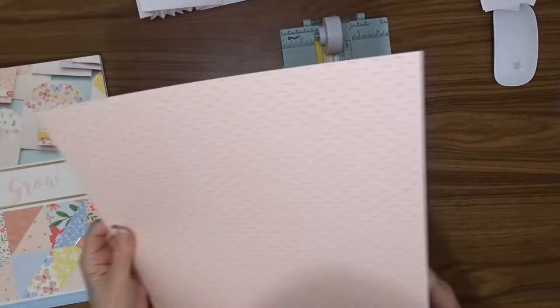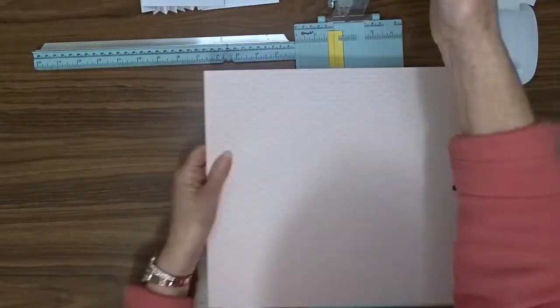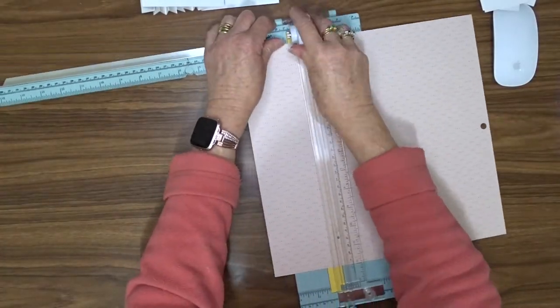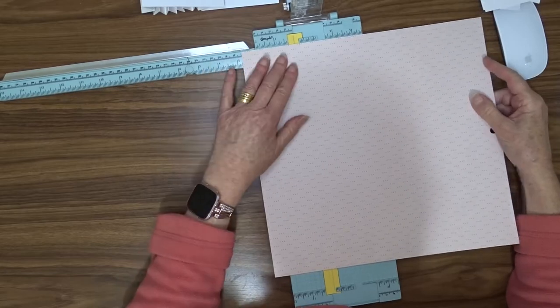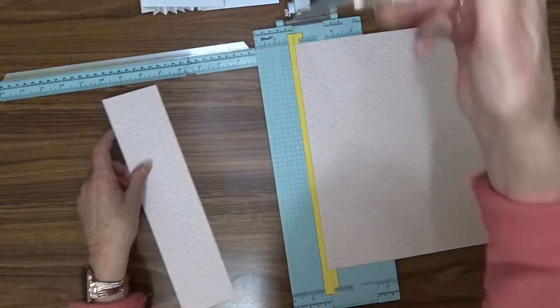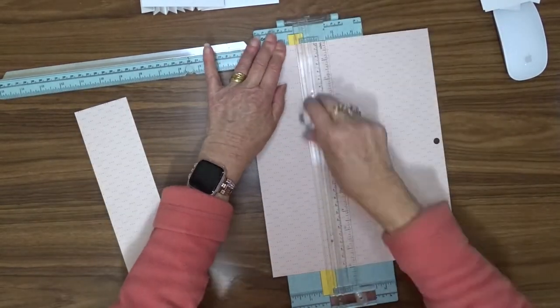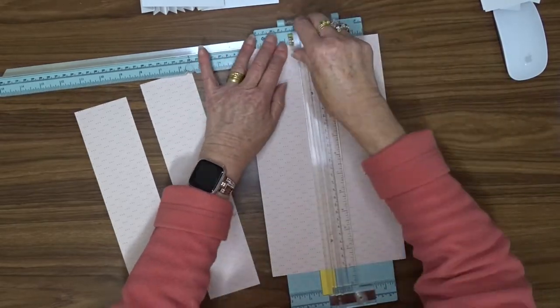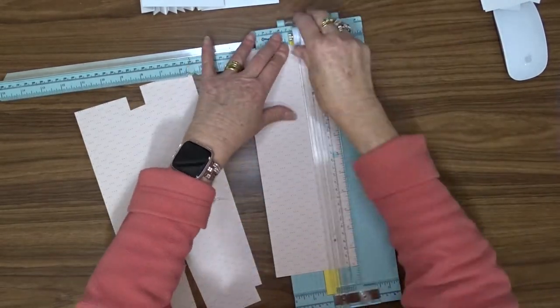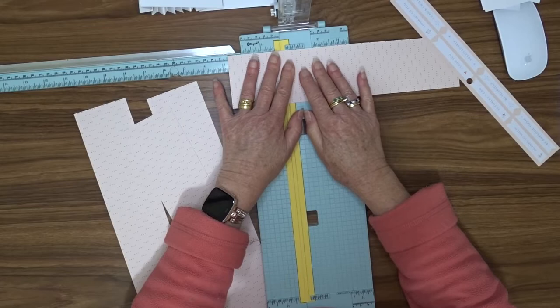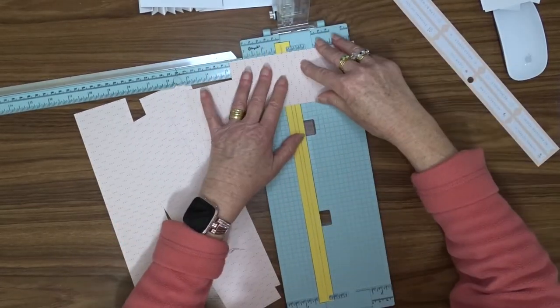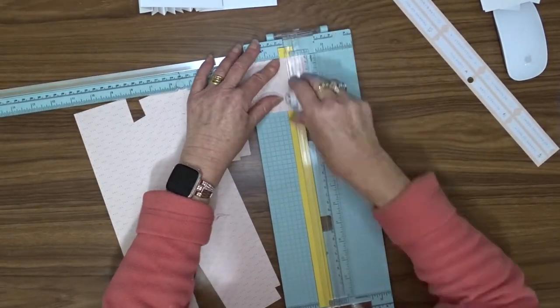The pattern paper that I'm going to use to decorate this card comes from this DCWV paper pad called Love and Grow. I'm going to add this pattern paper to my 16 squares or 16 pieces of cardstock that are 3 inches by 2 and 15 sixteenths. So I'm going to cut 16 pieces that are 2 and 3 quarter inches square.